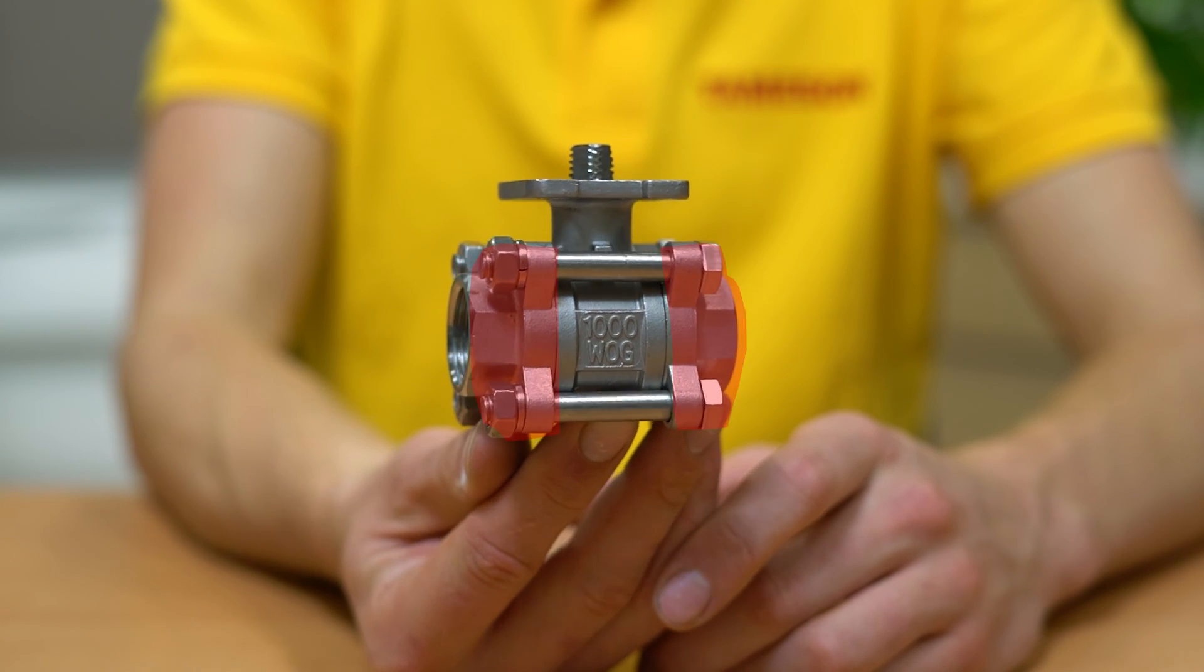As the name goes, a three-piece ball valve has three pieces, namely the body and two endcaps. The endcaps are threaded or welded onto the connecting pipes.